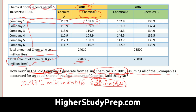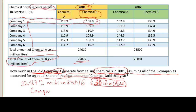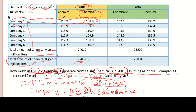Now I have the amount of chemical B sold by each company. For chemical B, the unit price corresponds to cents per litre — always be careful about units. To find the money company one generated, multiply the unit price of 108.9 cents per litre by the amount sold, which is 3,812 million litres. Since we want USD and 100 cents equals 1 USD, apply that conversion factor. Using a calculator, the final result is 4,151 million USD.